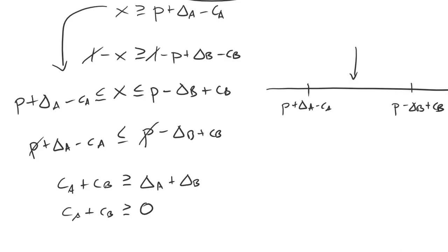Under normal circumstances, when there is no first strike advantage, we conclude that there exist mutually preferable settlements as long as CA plus CB is greater than or equal to zero. Well, if you set delta A and delta B equal to zero, you're erasing the first strike advantages and we're left with our original question.